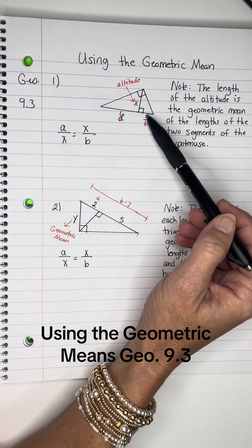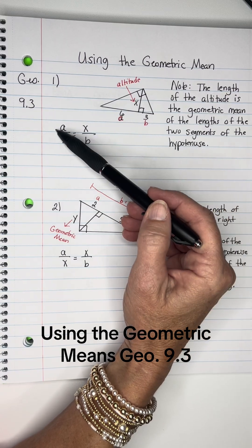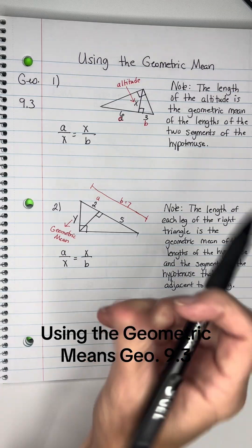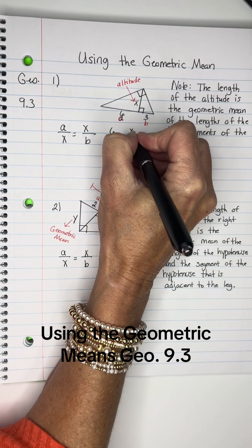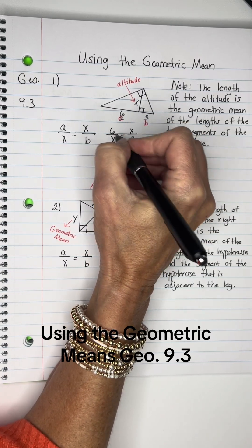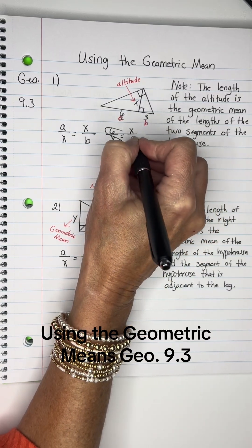So that means with this hypotenuse, I can call one part the A and the other part the B. So I'm going to say 6 over X equals X over 3. So one is A, one will be B, and cross multiply.